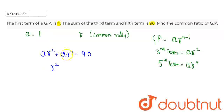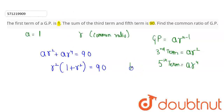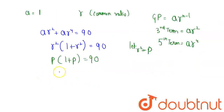Now, if I take R² common from this expression, it becomes R²(1 + R²) = 90. Let R² = P, so I can write this as P(1 + P) = 90, which gives P² + P − 90 = 0.